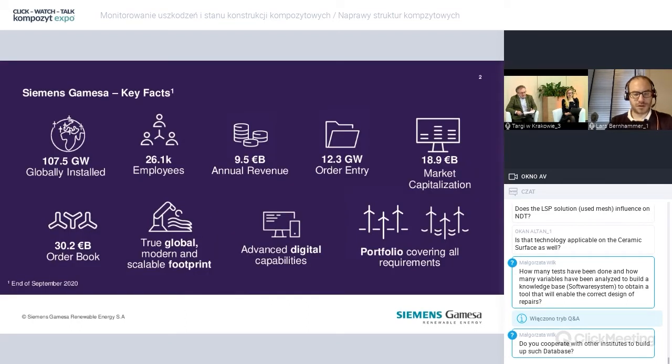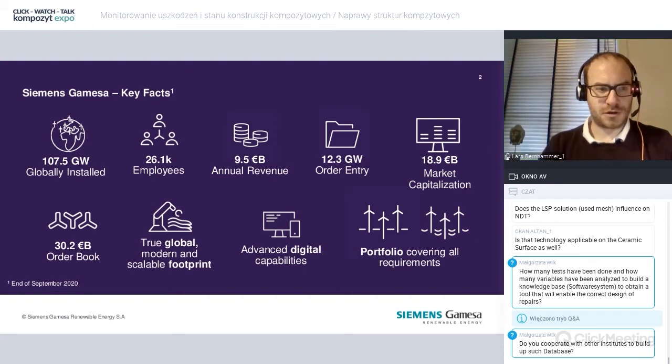I would like to start out with a short presentation of Siemens Gamesa. Siemens Gamesa is one of the largest original equipment manufacturers in the wind energy industry with a total of more than 100 gigawatts of installed wind turbines. Just as a comparison, that corresponds to an equivalent of roughly 700 nuclear power plant reactors. We have 26,000 employees and an annual revenue of around or just short of 10 billion euro.